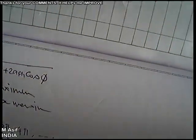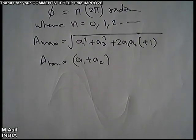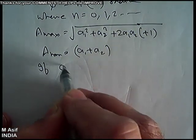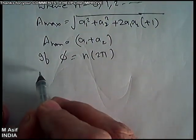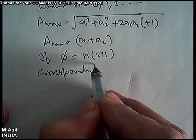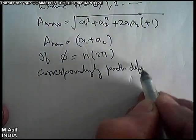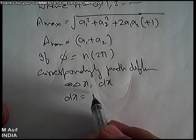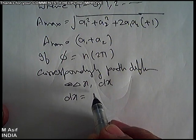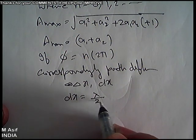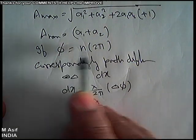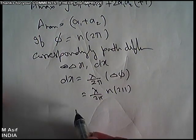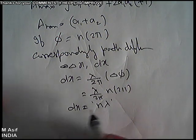For maxima, the first condition is that the phase difference must be an integral multiple of 2π. The second condition is in terms of path difference: if φ = n·2π radians, then correspondingly, path difference Δx = (λ/2π)·Δφ = (λ/2π)·(n·2π) = nλ. So the path difference must be an integral multiple of λ.